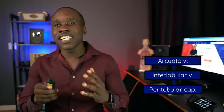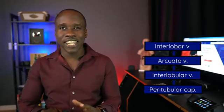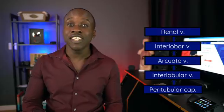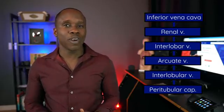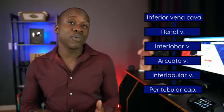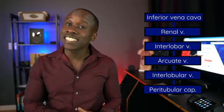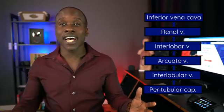The peritubular capillaries on the venous end lead to the interlobular veins, which then go via the arcuate veins to the interlobar veins. Depending on which textbook you're reading, you may see it skip the segmental veins and go directly into the renal veins, so that blood can go back via the inferior vena cava to the heart. In some textbooks, the segmental veins are included, but in most cases you'll see it going from the interlobar veins to the renal veins, and then back to the inferior vena cava and the heart.